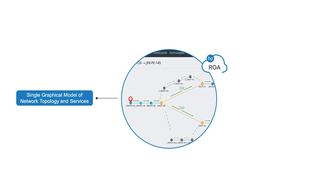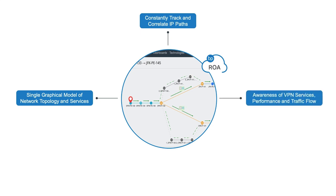ROA has a unique ability to constantly track the active IP path upon which traffic is flowing. The state of IP paths can shift over time, yet the correlation of IP path to optical transport is always available. In addition to simple IP-optical correlation, ROA also has full awareness of customer VPN services, performance of IP traffic on each network link, and traffic flow data. All this information is presented along with the transport network paths for a full understanding of the impact of transport network outages on application performance and the specific IP flows affected.